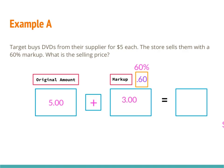That three dollars is my markup, but the problem asks for the selling price, not just the markup. It's very important to read what the question is asking. In this case they're asking for the total price, so I add five dollars plus three dollars and get eight dollars. The selling price of each DVD is eight dollars, covering employee salary, rent, and utilities.